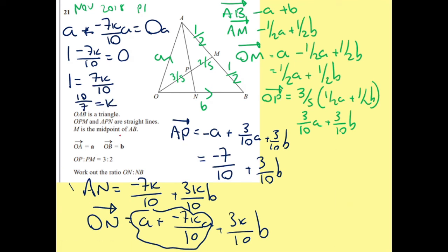So for the last bit, if I know K is 10 over 7, I substitute 10 over 7 into here. So I know all of this will actually just equal to nothing. So if I do 3 over 10 times K, which happens to be 10 over 7.